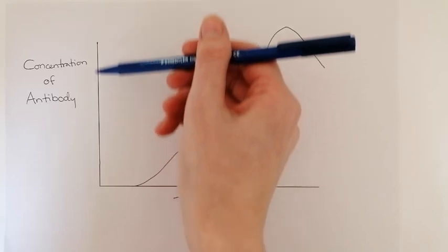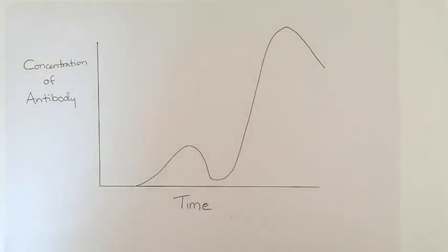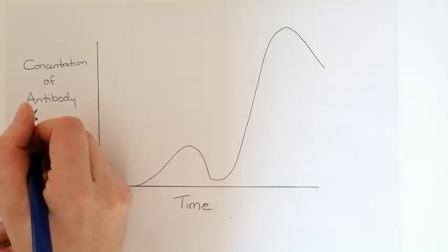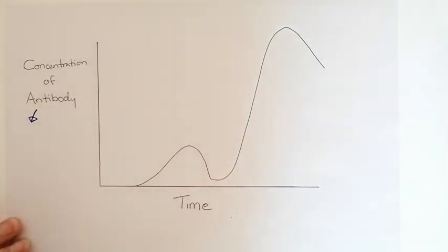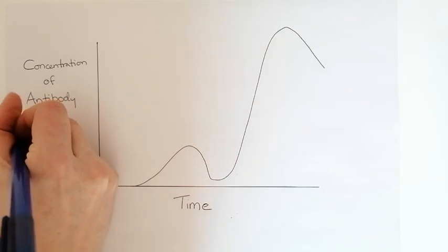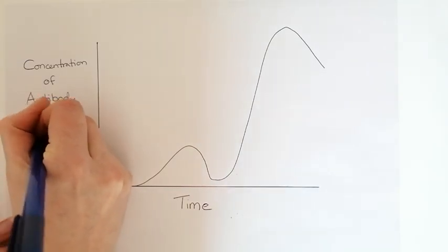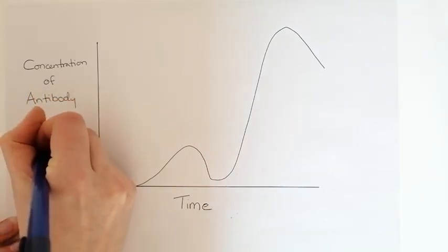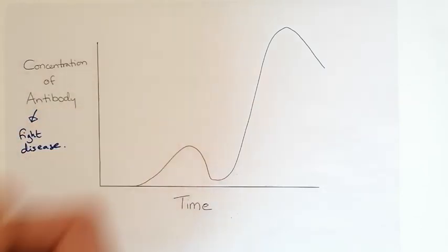And then up the side we have concentration of antibody. Now an antibody is part of the immune system's way of fighting diseases and these are released by white blood cells to fight disease, usually bacterial.